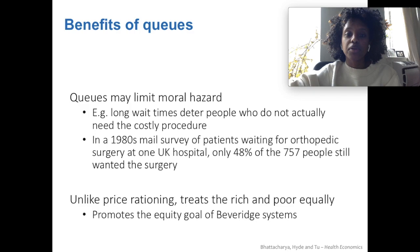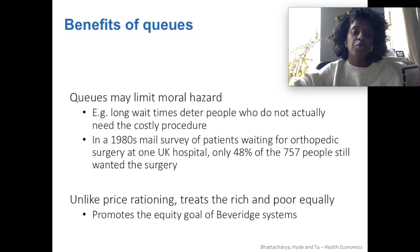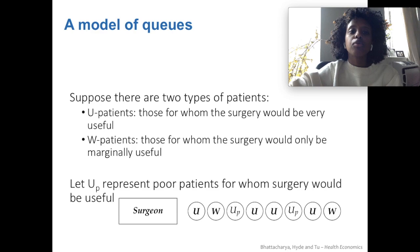Queues, on the other hand, do have some benefits. They can limit moral hazard — for example, deterring people who don't actually need a costly procedure. In UK hospitals in the 80s, only about half of the people still wanted the procedure by the time their number came up in the system. And unlike price-based rationing, queues treat the rich and poor equally, which promotes the equity-centric goal of the Beveridge system.